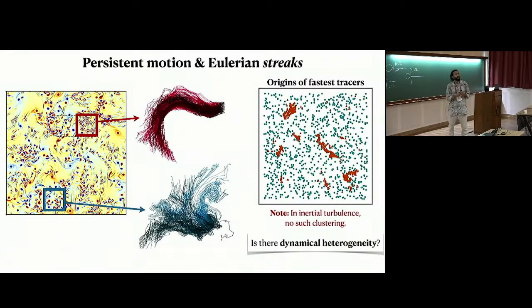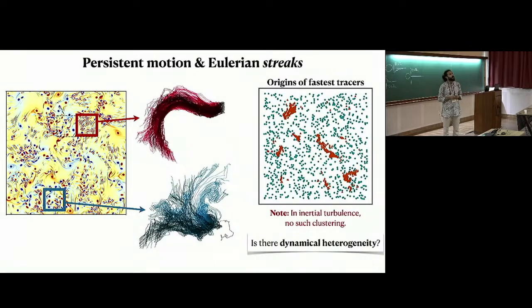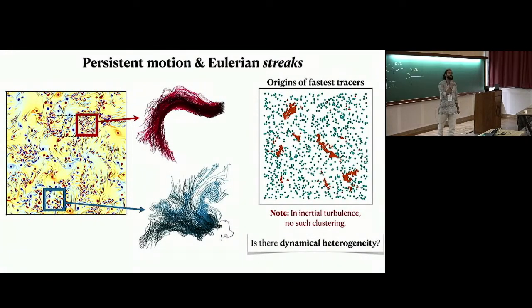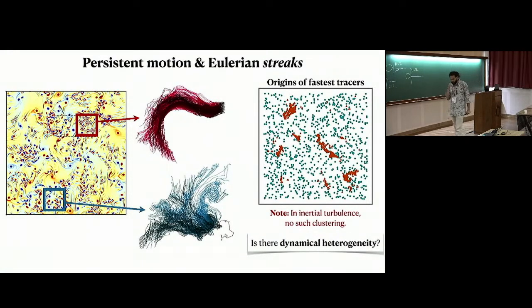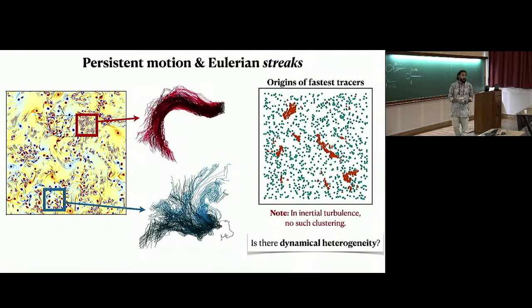Q: In turbulence you have non-Gaussian tails — does that have any correlation with tracers having diffusive motion? A: The non-Gaussian tails are extreme events, very rare — very few points in the flow with very large deviations. For inertial particles you can have slingshot effects and persistence, and people have looked at that. But typically those contribute very little to the overall diffusion of tracers. For active turbulence, the super-diffusive behavior comes from the streak regions which are actually the milder, not the most intense, parts of the flow.